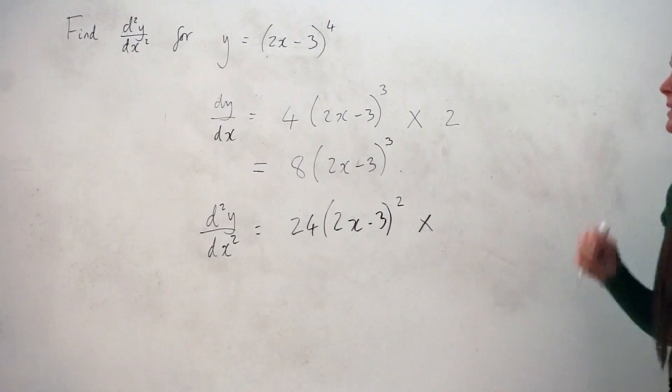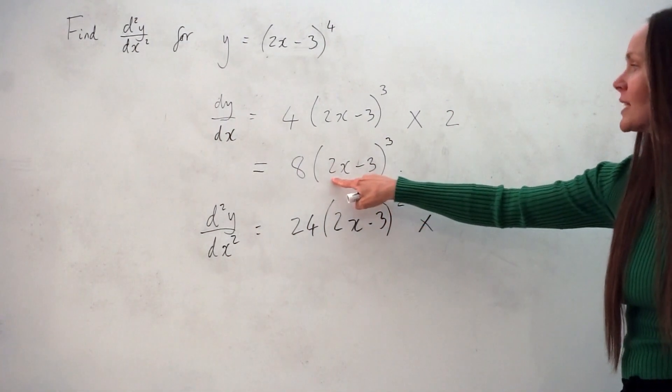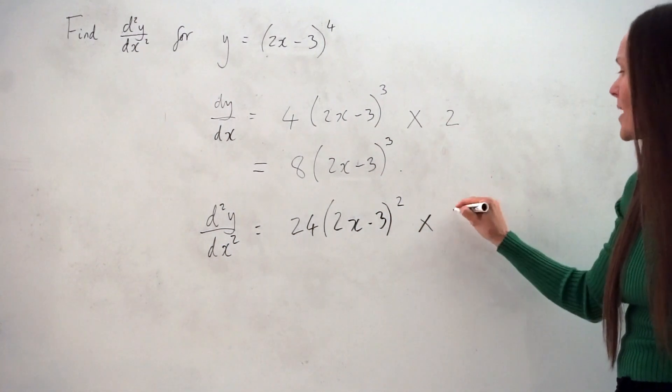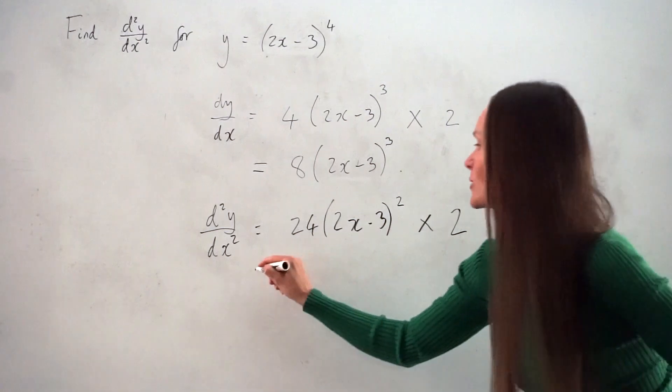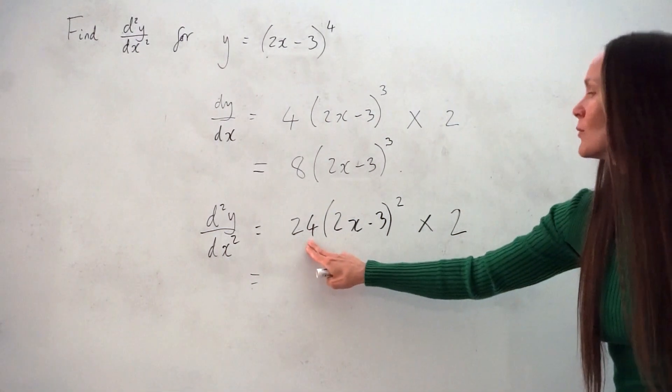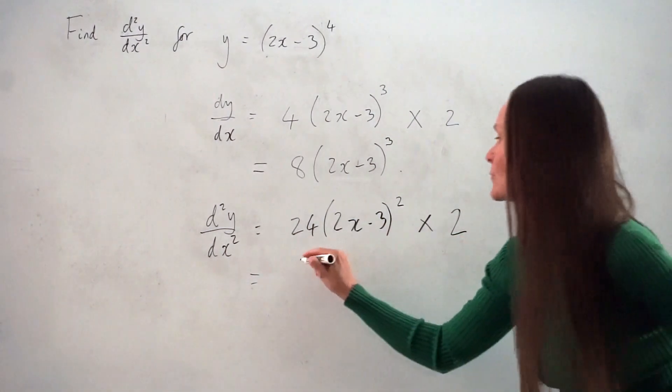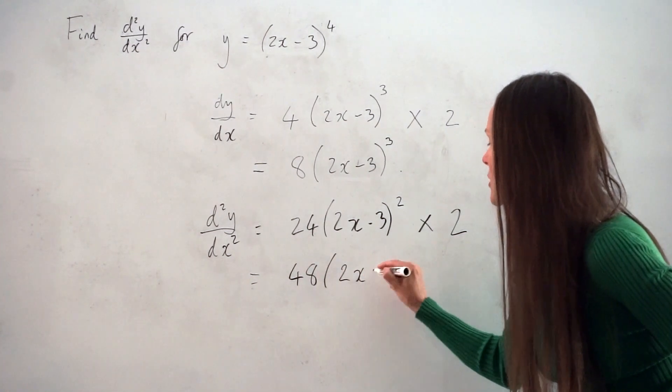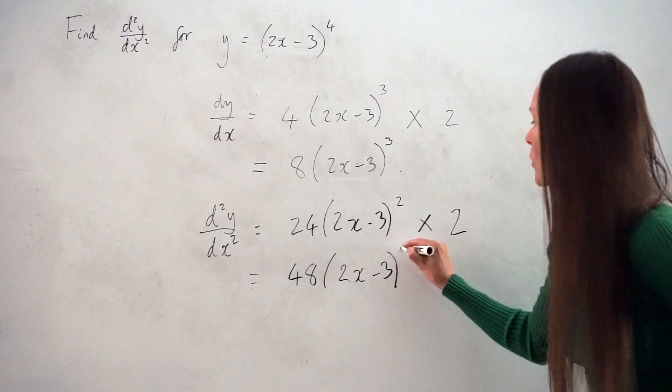Remember, the derivative of 2x - 3 was positive 2. And then we can just calculate that or simplify. So 24 multiplied by 2 is 48. So the answer is 48(2x - 3)².